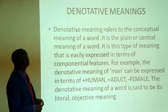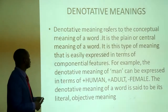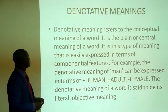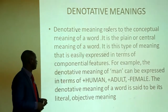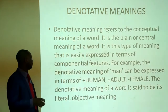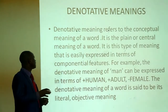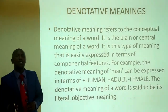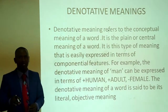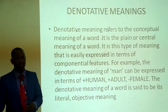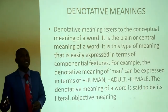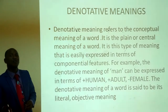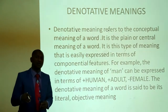Denotative meaning refers to the conceptual or plain, central meaning of a word. It is easily expressed in terms of componential features. For example, the denotative meaning of 'man' can be expressed as: [+human], [+adult], [-female] — that is, a man is human, adult, but not female. The denotative meaning of a word is its literal, objective meaning.